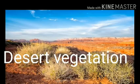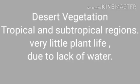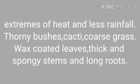Desert vegetation is found in the tropical and subtropical regions. There is very little plant life in a desert due to lack of water. Only those plants can survive here which need extremes of heat and less rainfall. Thorny bushes, cacti, and coarse grass are the most common types of plants or shrubs found in nearly all the deserts of the world.